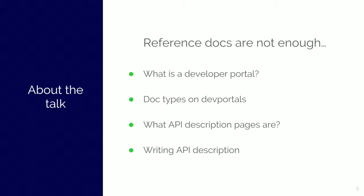First I will talk briefly about dev portals in general, and explain how we understand them, what they are for. Then we will check the documentation types that are relevant in the developer portal, so we can situate the API description doc type better in its own context.